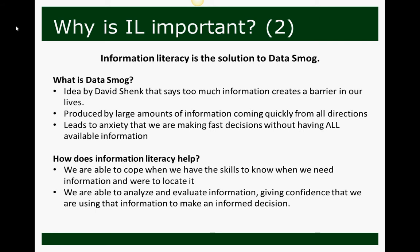Another reason information literacy is important is that it's the solution to a term called data smog. Data smog was first coined by David Shenk, and it's the concept that too much information can create a barrier in our lives. This happens when large amounts of information come quickly at us from all directions, leading to an anxiety about having to make decisions quickly without having all of the available information. Information literacy helps with this because we're able to cope a bit better when we know we have the skills to know when we need information and where to locate it.